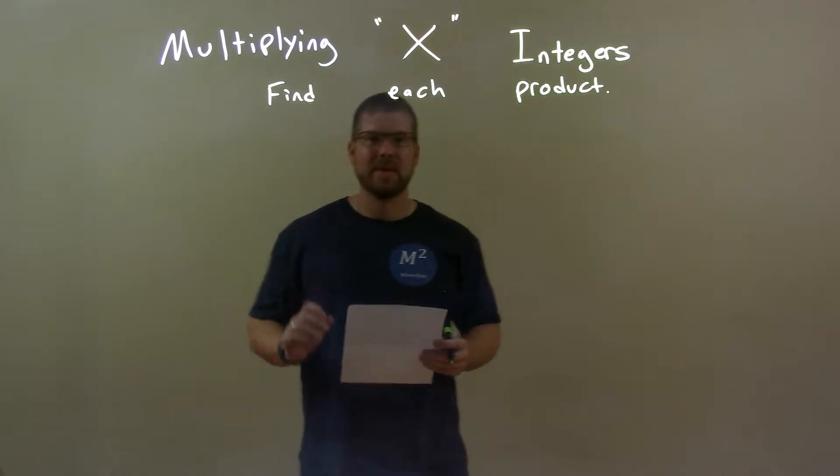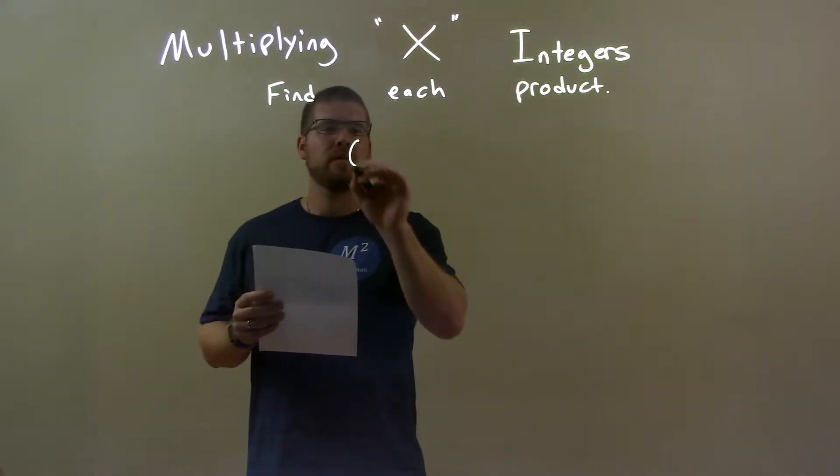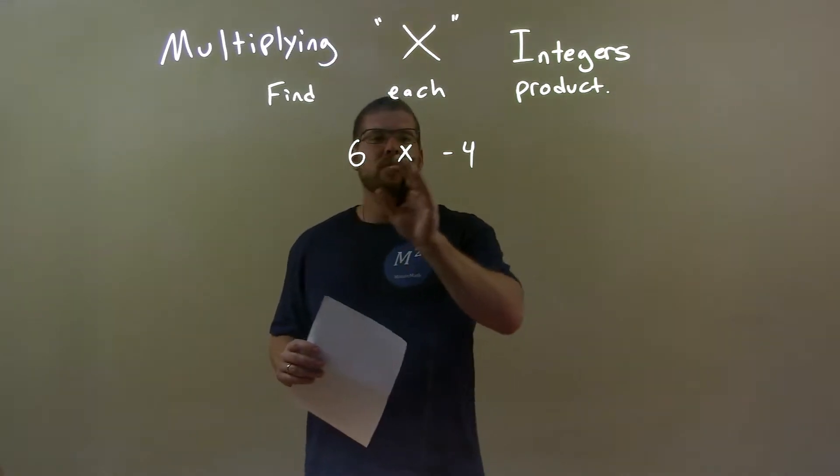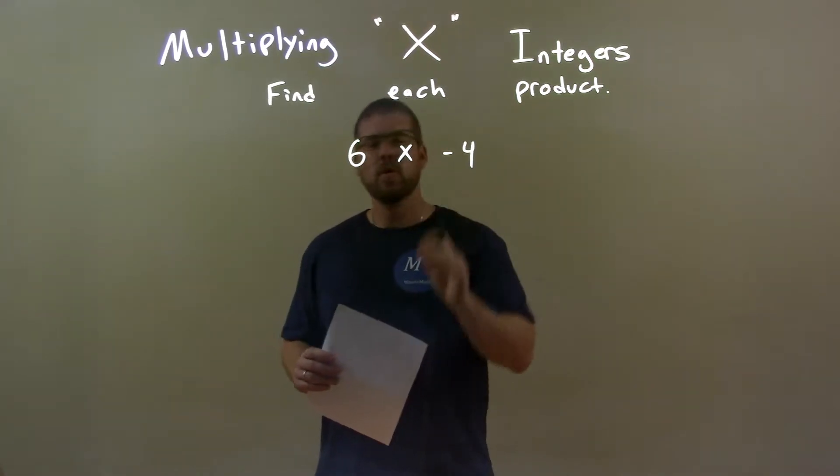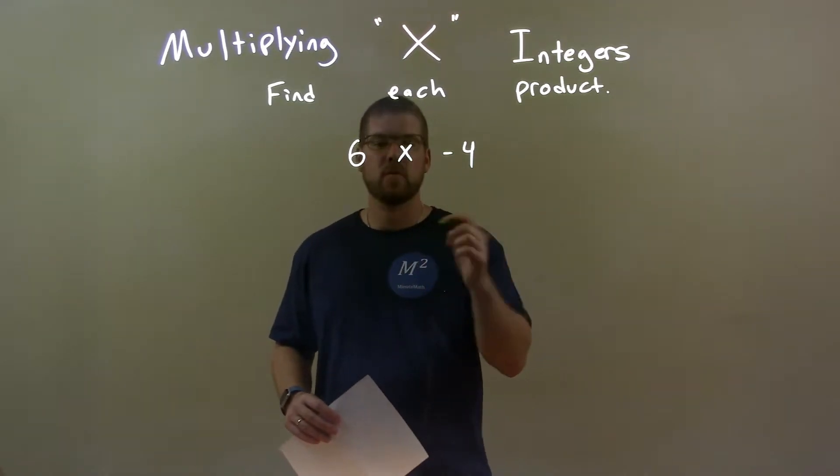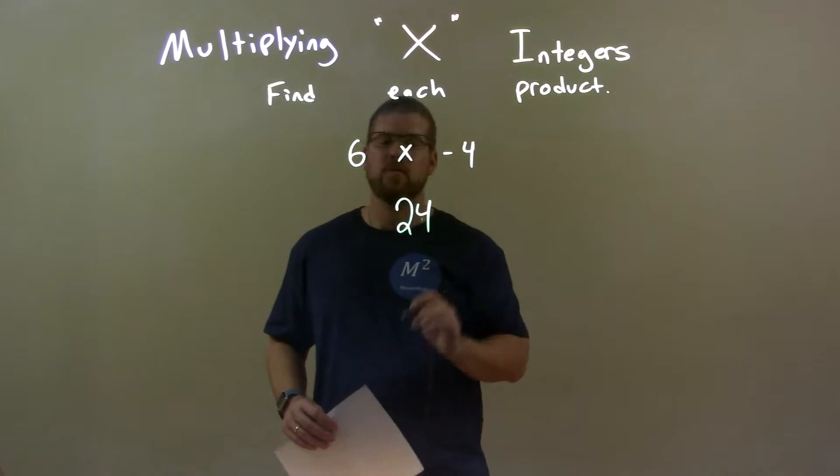If I was given these integers, 6 times negative 4, when we have 6 times negative 4, I ignore the negatives first. I think 6 times 4. Well, 6 times 4 is 24, so we have 24 right there.